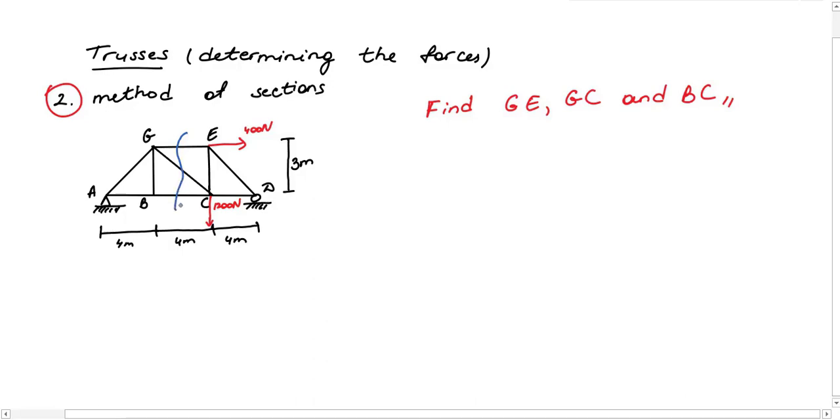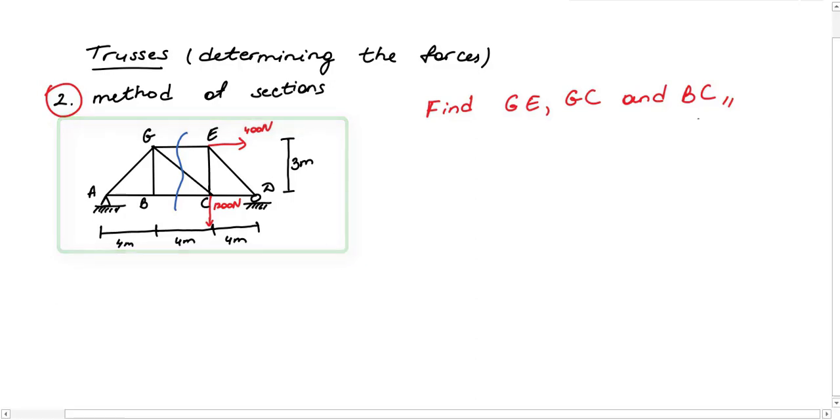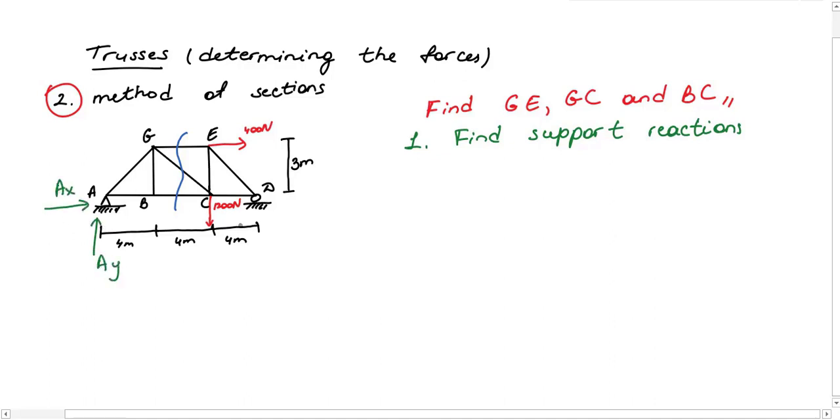The principle is that you cut truss with an imaginary section into two parts to determine forces in members. First I will make a decision on how to cut, but it is so obvious because I was asked to find GE, GC and BC members. Before splitting them into these two parts, we have to find support reactions. By the way, A is pin and D is roller support.